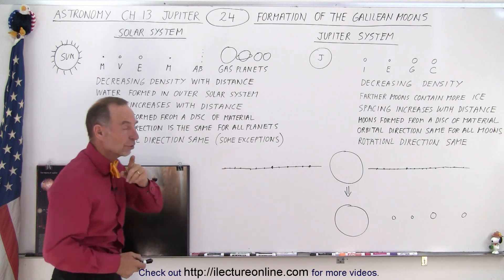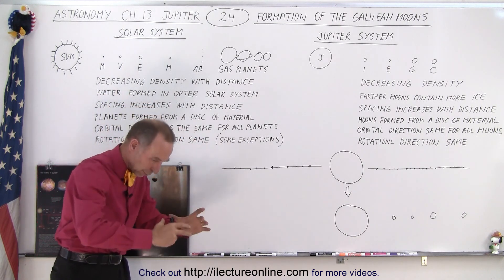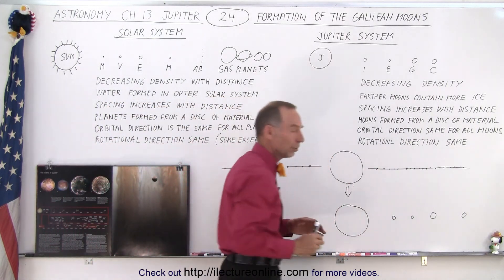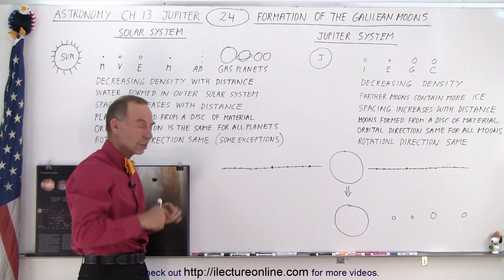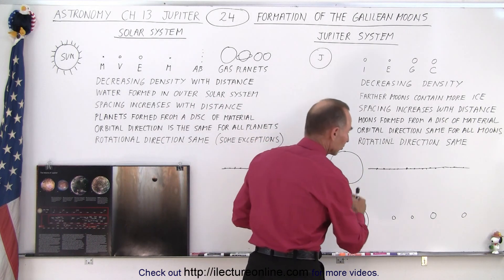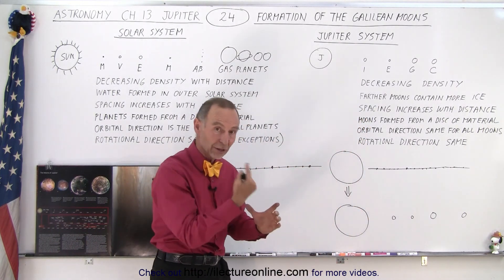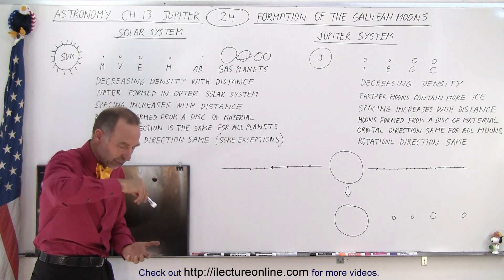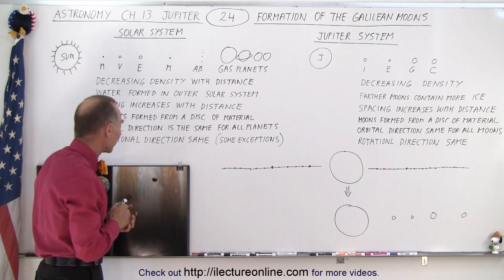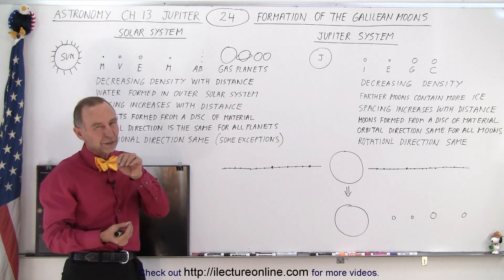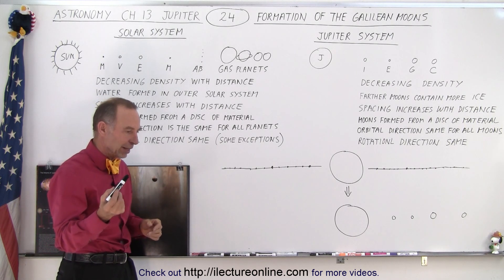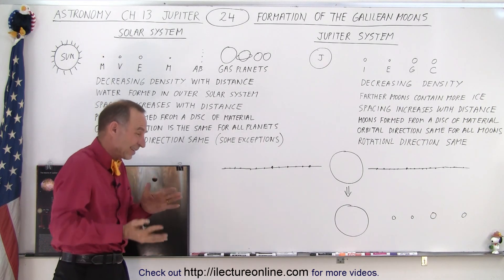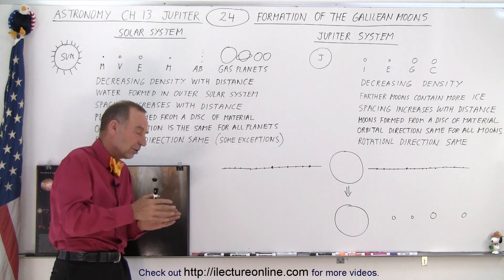Also notice that the orbital direction of all the planets is in one direction — looking from the north down, we see everything moving around the Sun in a counterclockwise direction. We see the same for the moons around Jupiter; all the moons revolve around the planet in a counterclockwise direction. We can also see that the rotational direction is the same for all the moons, counterclockwise looking from north down, and for the solar system by and large that's the same as well. Most objects are rotating counterclockwise about their axis, with some exceptions such as Venus — which we believe was turned upside down — and Uranus, which was probably tilted over, as indicated by the direction of its moons.